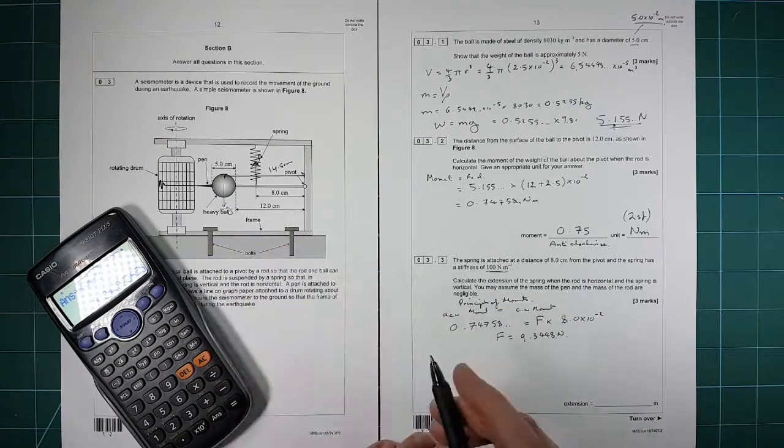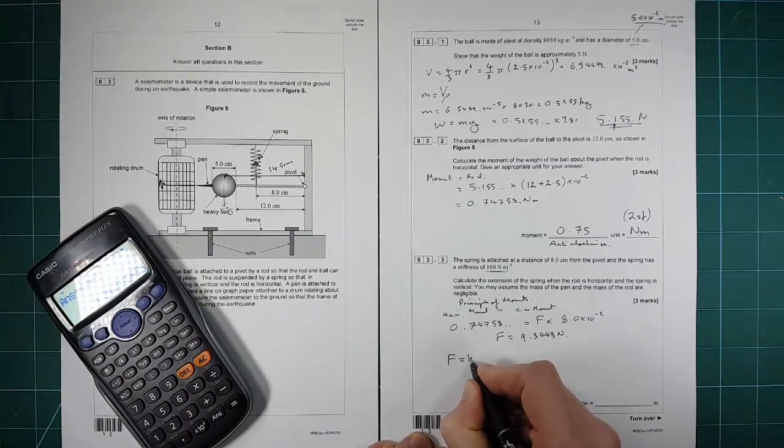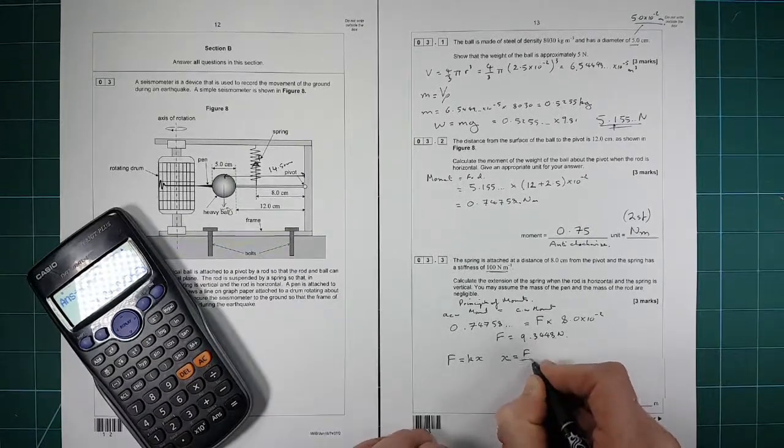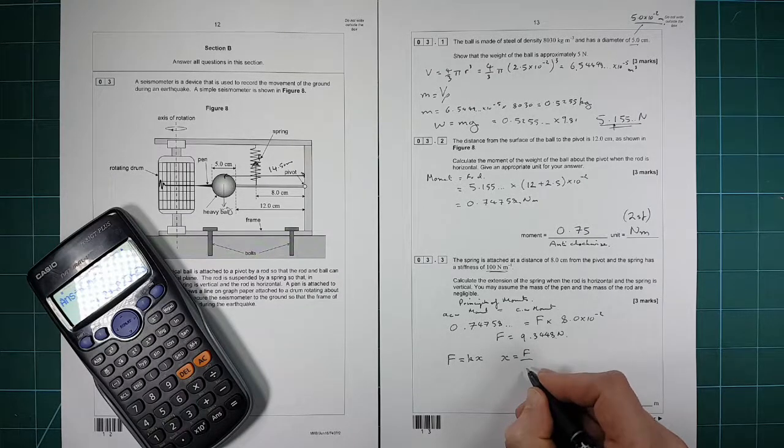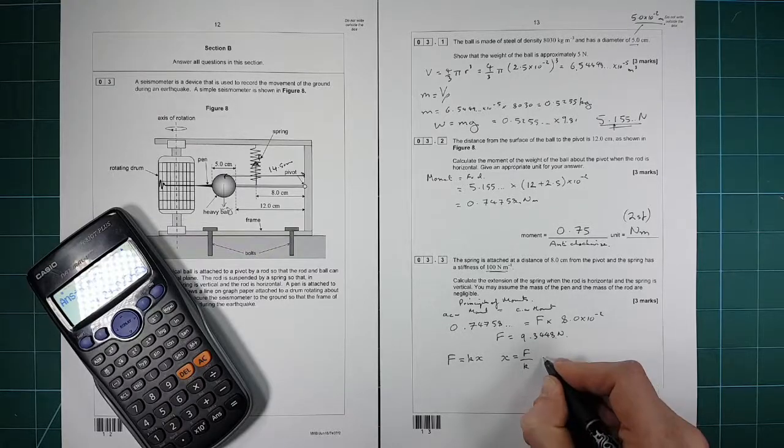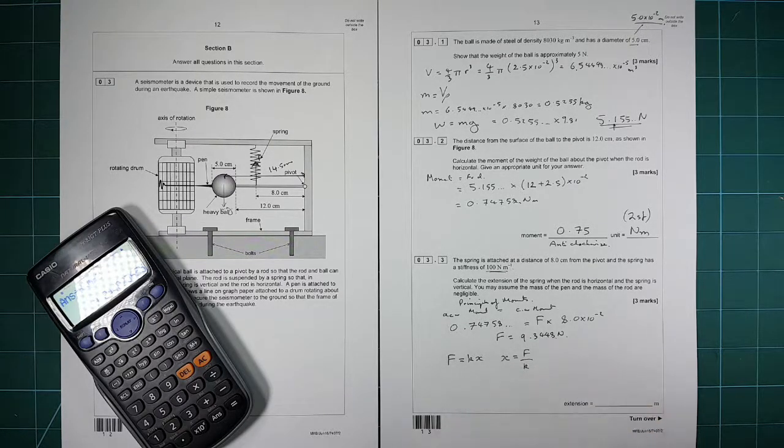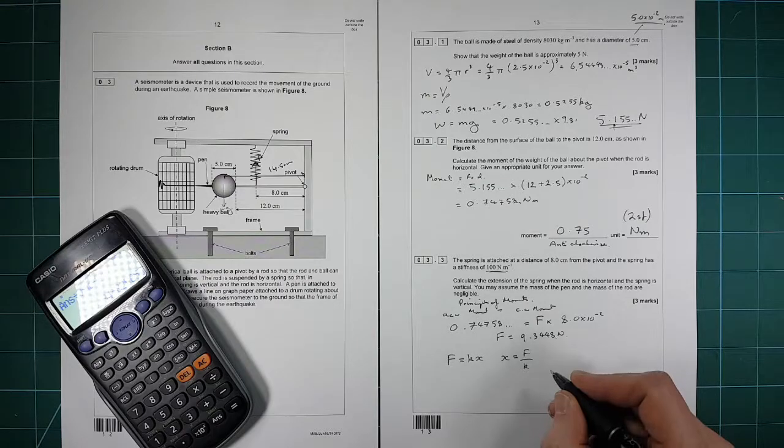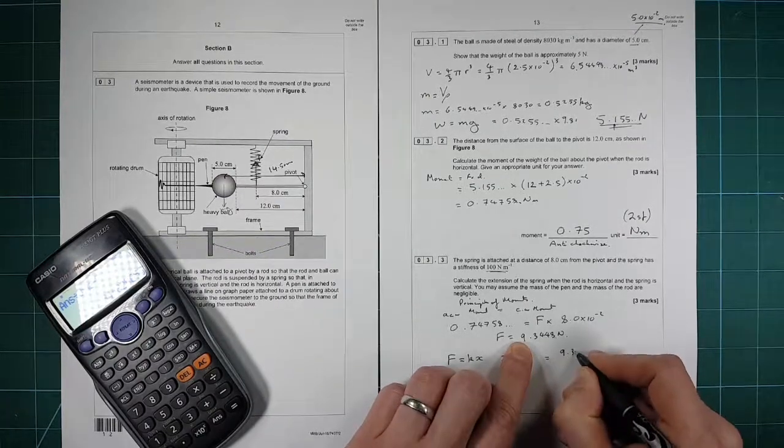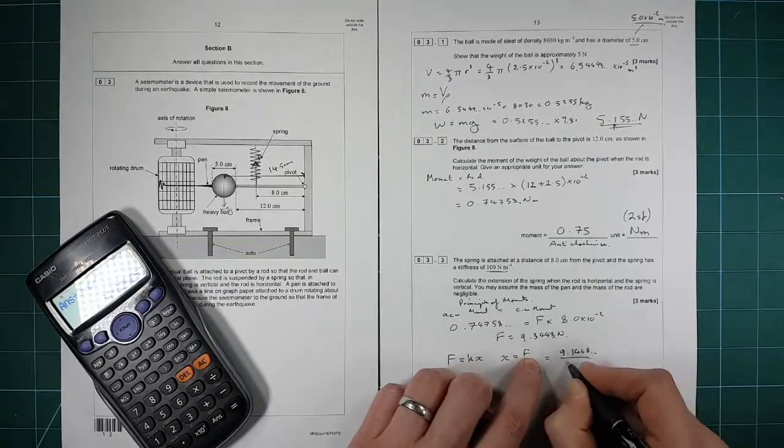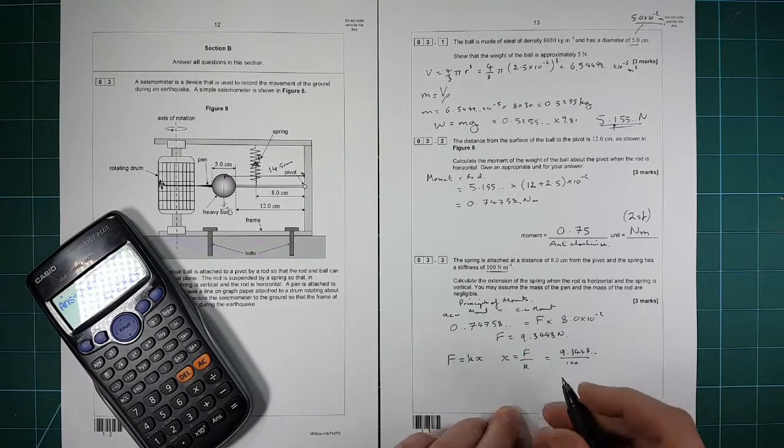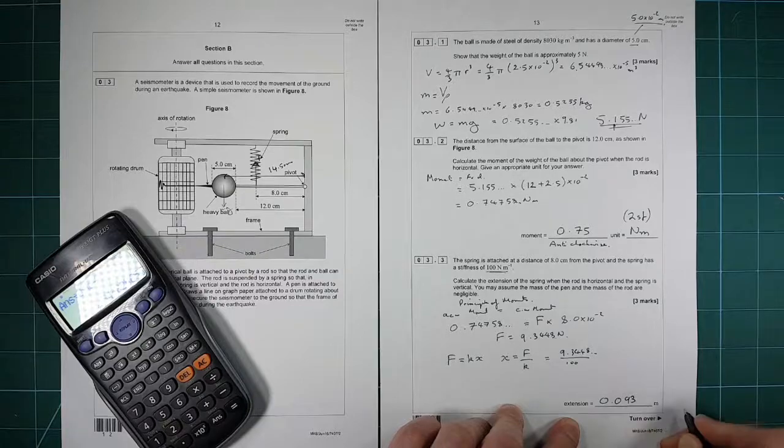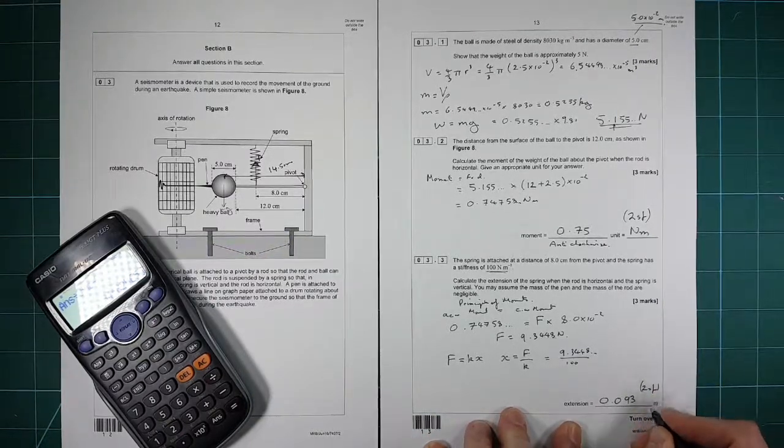Then we need to think about how much extension of the spring that's going to be. The force is equal to the spring constant times by the extension. So we have the extension is equal to the force on the spring divided by the spring constant, which is Hooke's law. I've written X, they've used delta L. So that is equal to 9.3448 etc. divided by 100, so that is just 0.093 meters to two significant figures.